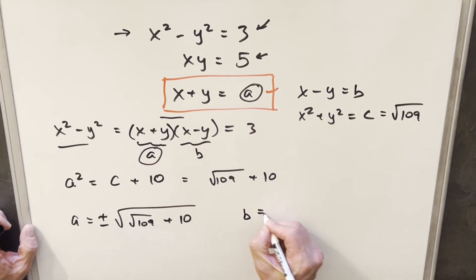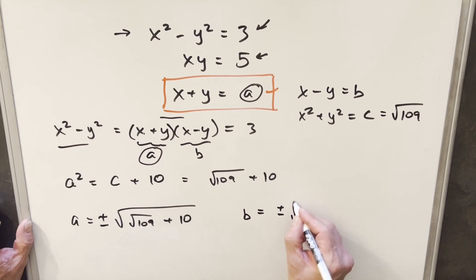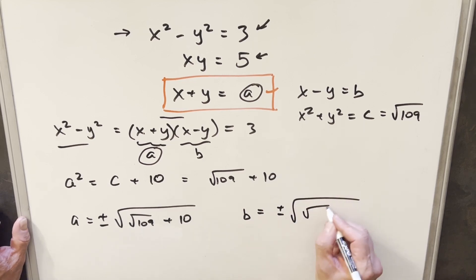And so if we needed that, let's just get that while we're at it, even though they don't ask for it. So for our b value, we'd end up with plus or minus square root of 109 minus 10. I erased it, but the b squared value is c minus 10. So that would give us this.